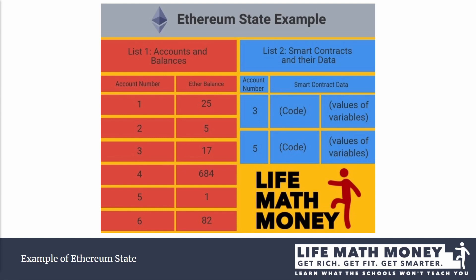A smart contract account is called a contract account, and the other accounts not owned by a smart contract — that is, user accounts owned by a human — are called externally owned accounts. There are six total accounts, and you can see their Ether balances. Accounts three and five are contract accounts, which means accounts one, two, four, and six are externally owned accounts — owned by a human or a user.